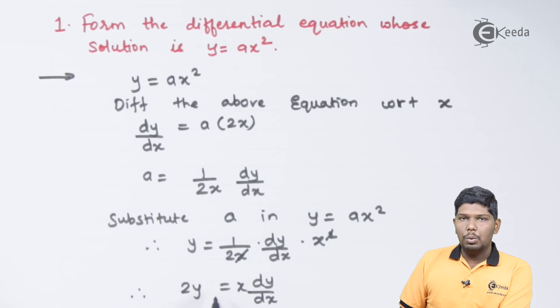And this will give you 2y = x dy/dx. Now remember, whenever we write a differential equation, its standard form should be in the form of highest order derivative followed by the lowest derivatives, and further we have to write the constant part.